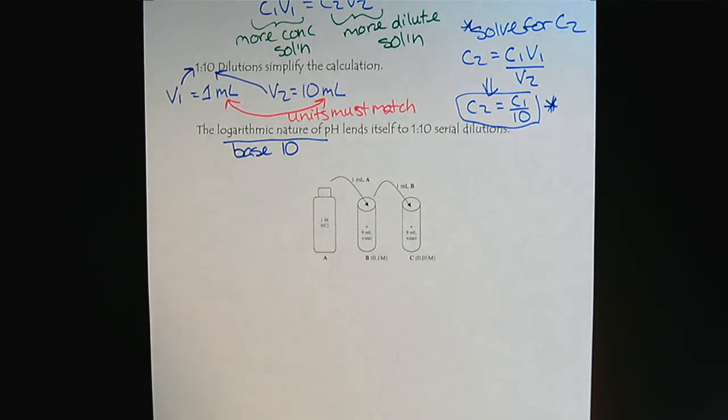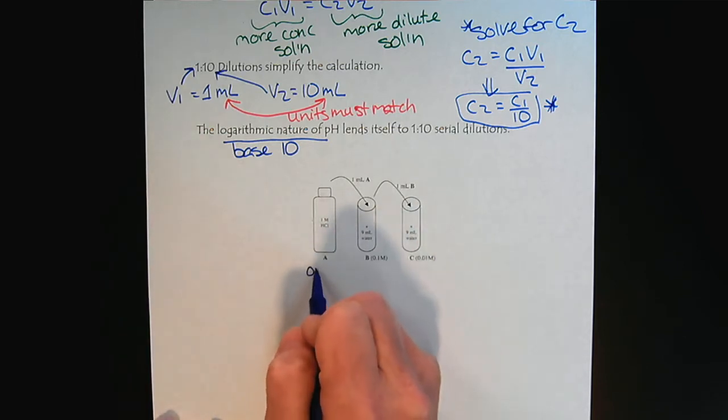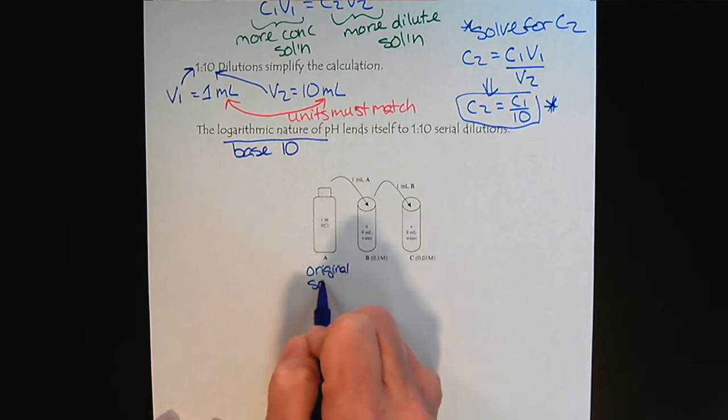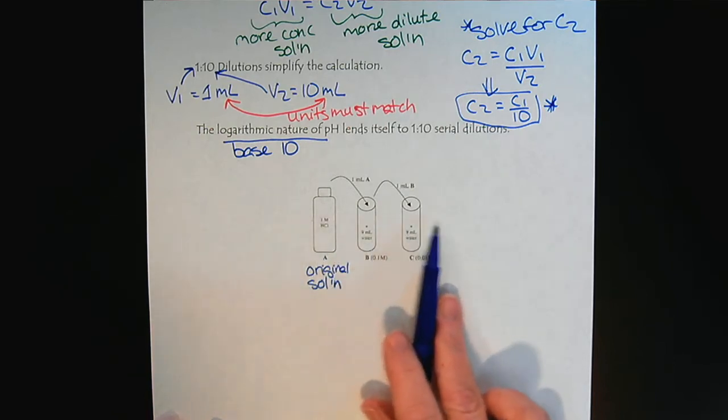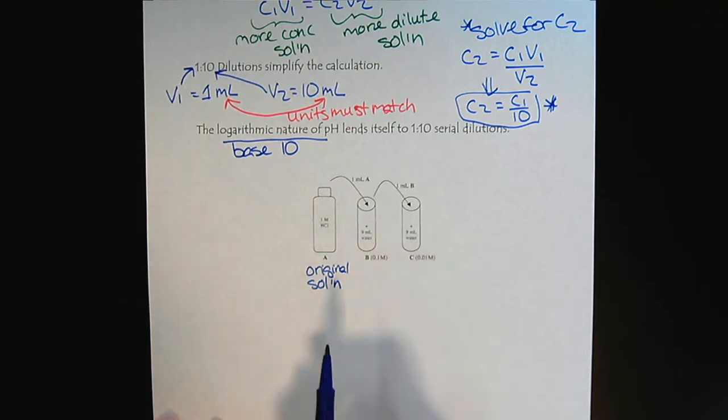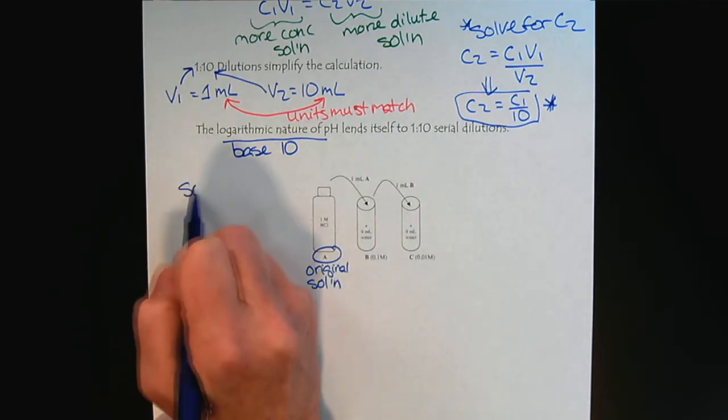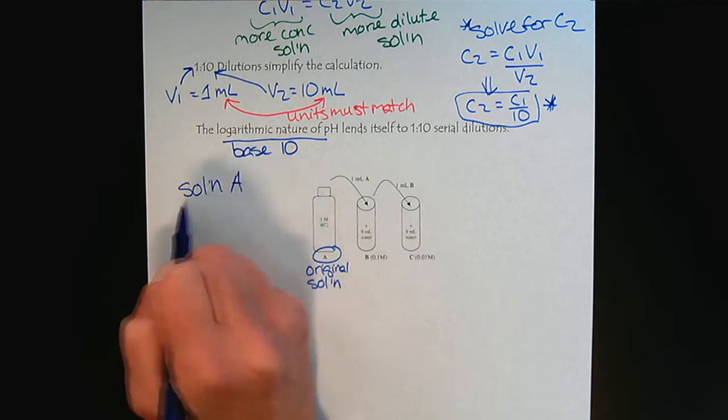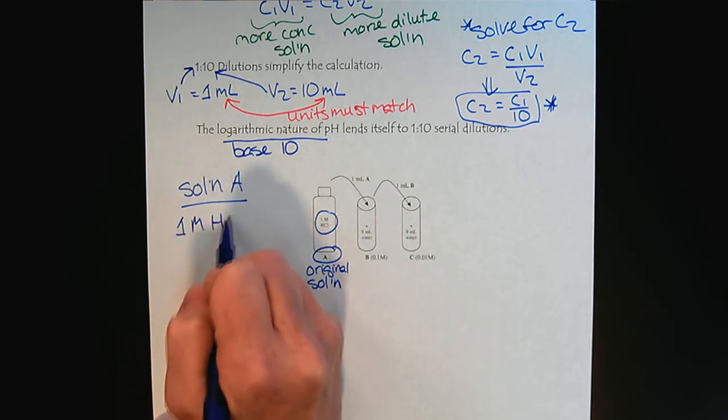So we begin with solution A. This is our original stock solution. Typically when you're in the lab, you'll start with a carefully prepared original stock solution, and then we can make a series of dilutions, a serial dilution. So this is solution A. Let's see what we know about solution A. We can read the bottle. It's 1 molar HCl.